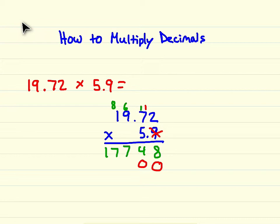5 times 7 is 35, plus 1 is 36, carry your 3. 5 times 9 is 45, plus 3 is 48, carry your 4. And 5 times 1 is 5, plus 4 is 9.